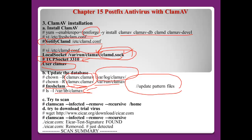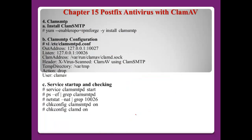To test the ClamAV installation, use the command: clamscan --infected --remove --recursive /home (for example, scanning the home directory). For testing, download the eicar.com test file, which is a standard test file that includes a simulated virus signature. Run clamscan and it will detect this file.